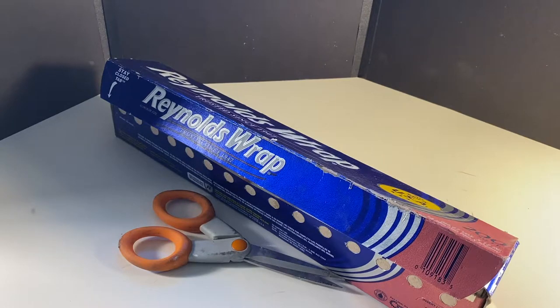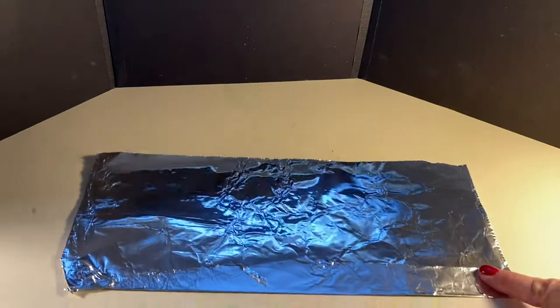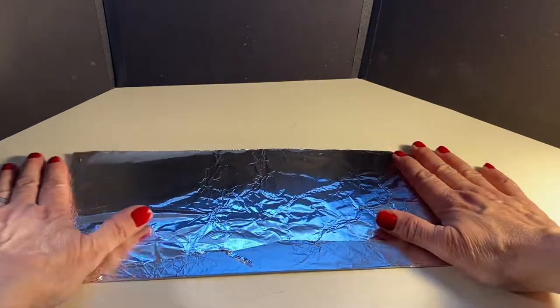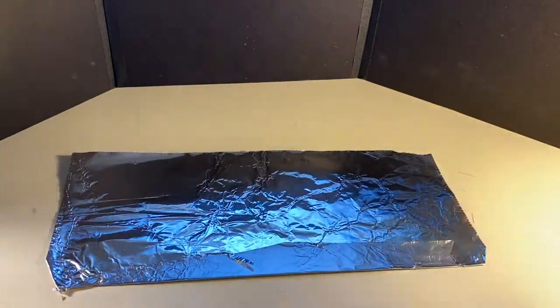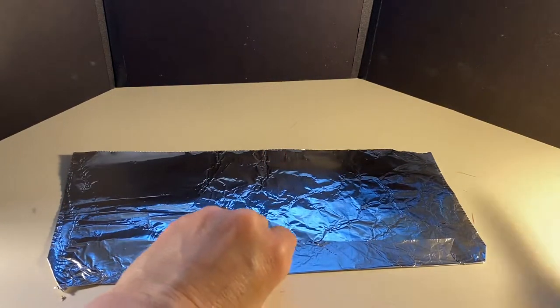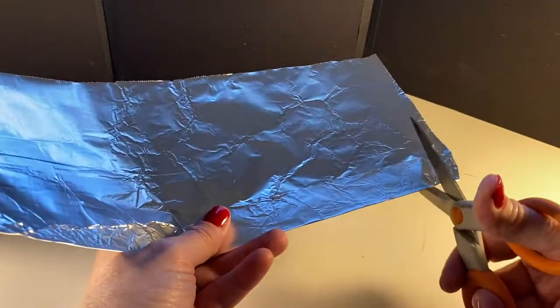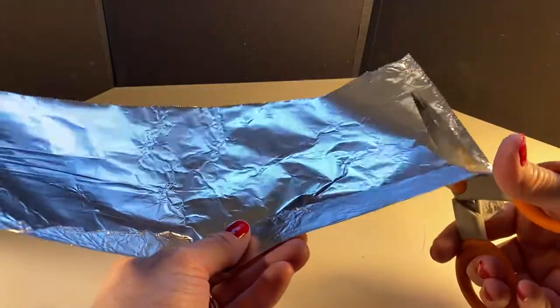For this you're going to need some Reynolds wrap, not a whole lot, so make sure you have permission. This is about how much you need - it's like half a sheet of paper, maybe a little bit more - and you're going to want to cut strips.